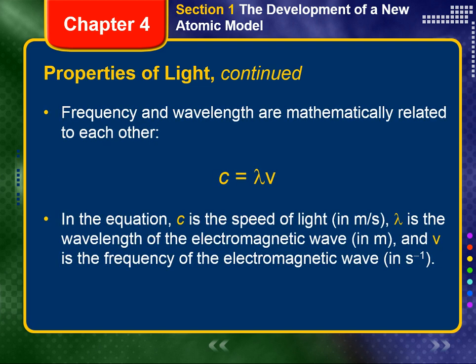Frequency and wavelength are mathematically related to each other. For electromagnetic radiation, this relationship is written as follows: C is equal to lambda multiplied by nu. In this equation, C is the speed of light, lambda is the wavelength of the electromagnetic wave, and nu is the frequency of the electromagnetic wave. Because C is the same for all electromagnetic radiation, the product lambda nu is a constant.